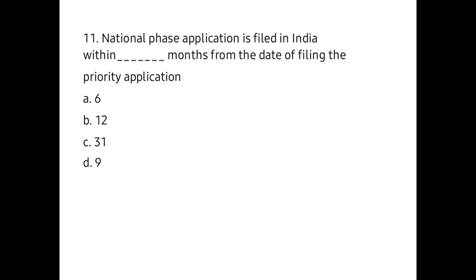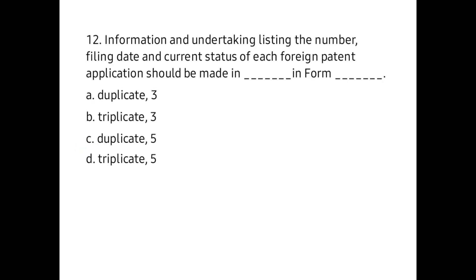Twelve: Information and undertaking listing the number, filing date, and current status of each foreign patent application should be made in ____ in Form ____. a) duplicate, 3, b) triplicate, 3, c) duplicate, 5, d) triplicate, 5.